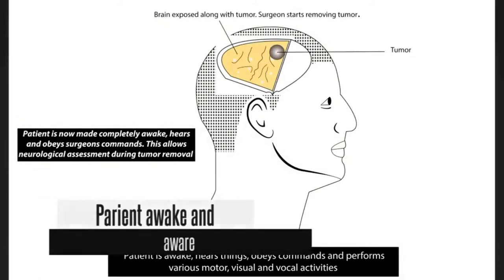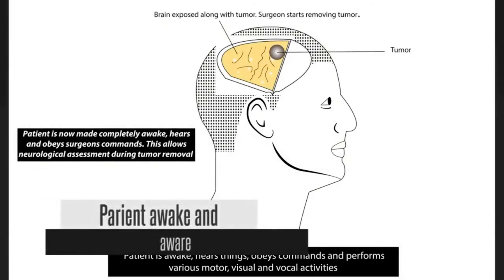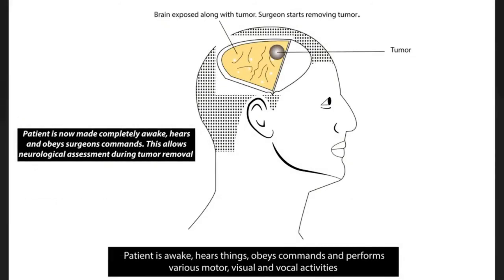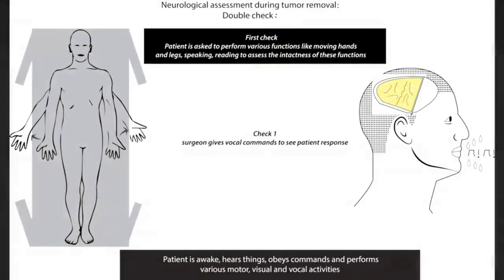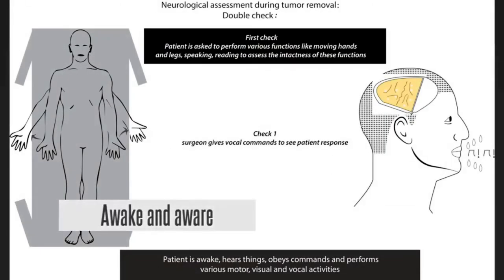The brain coverings called meninges are opened and the brain is exposed along with the tumor. Now the patient is made completely awake — they hear and obey the surgeon's commands. This allows neurological assessment during tumor removal.